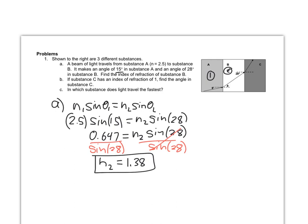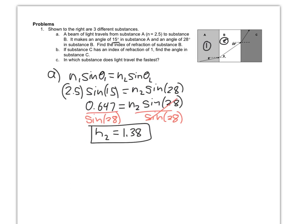Moving on to part B, we're now looking at the refraction as light moves from B to C. So B is substance 1 and C is substance 2. We're once again going to use Snell's Law: N1 sine of theta 1 equals N2 sine of theta 2. N1 is substance B, so it's 1.38 — the number we just found — times the sine of 28 degrees. That's a geometry thing: this angle and the previous angle will be the same, so it is 28 degrees again for the first refraction.